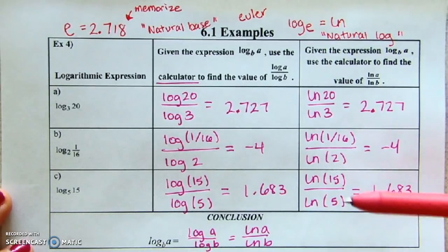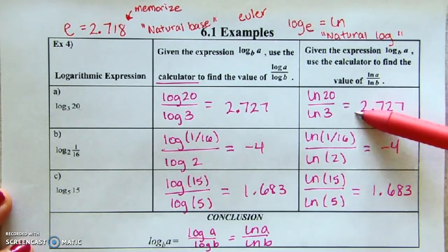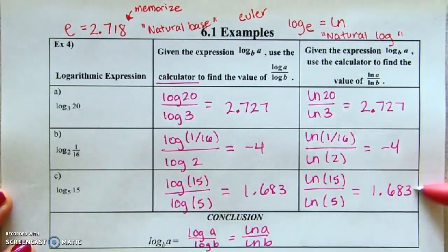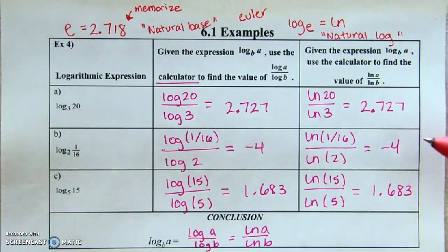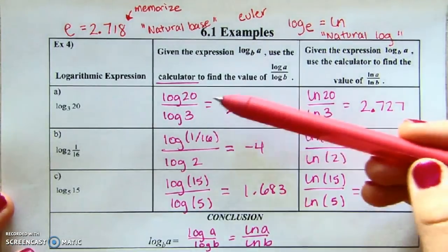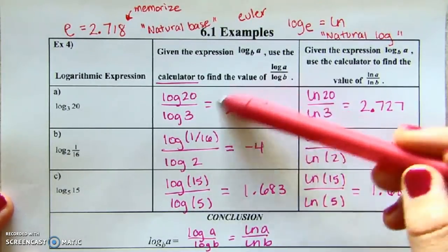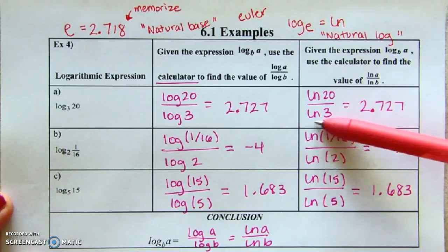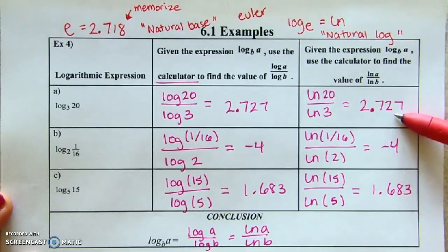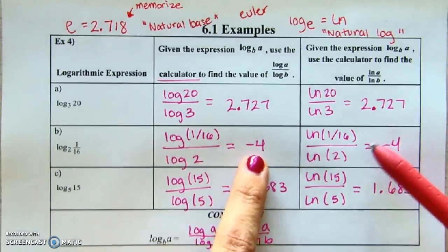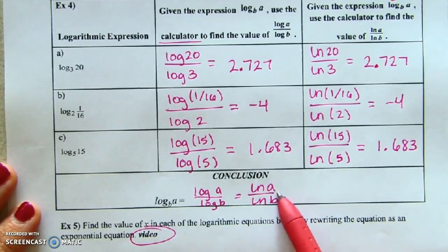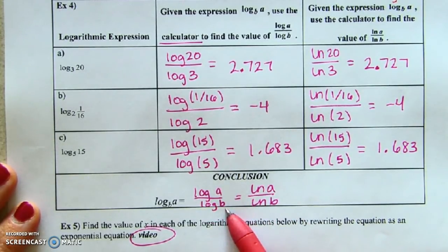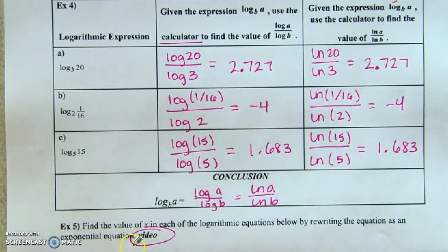Back to our notes. What is the purpose of example 4? It's to get you to discover something on your own. Do you see how log of 20 divided by log 3 gives a certain value, and the LN of 20 divided by the LN of 3 equals that same value? The conclusion: if you use the LN button in the calculator you'll get the same answer as if you use the LOG button.